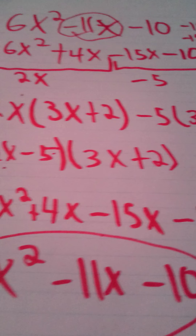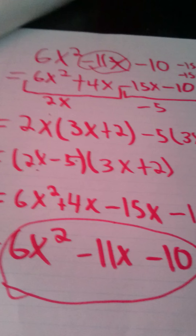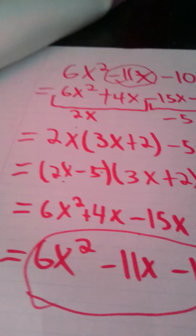So that's how you know that your equation — 2x minus 5 times 3x plus 2 — is the correct equation in factored form.